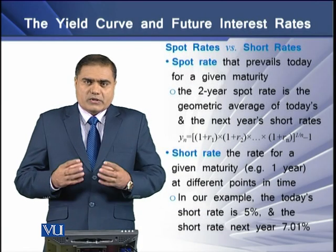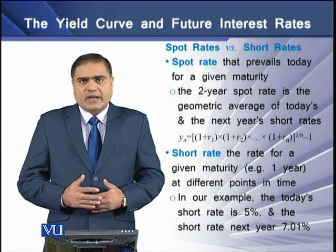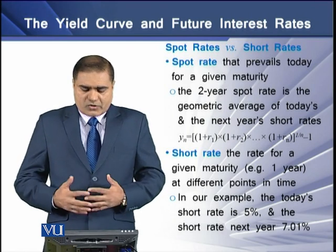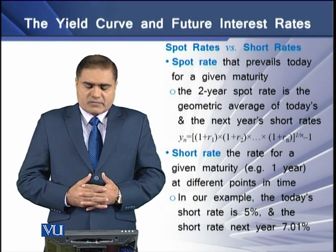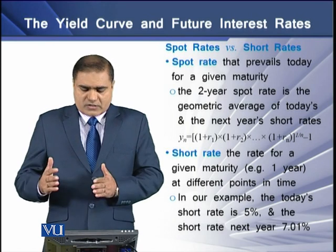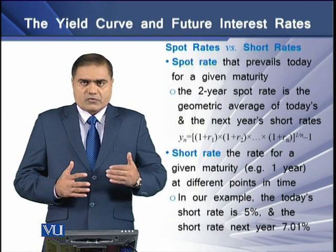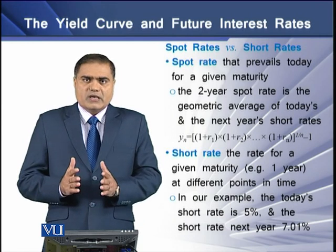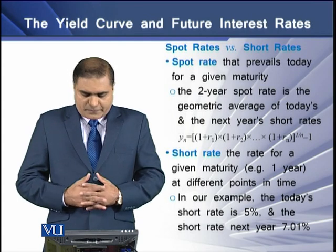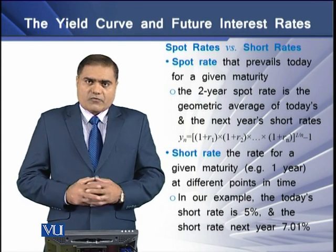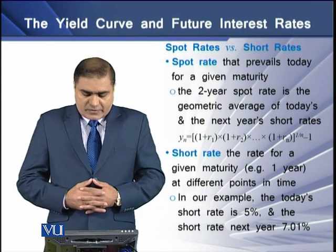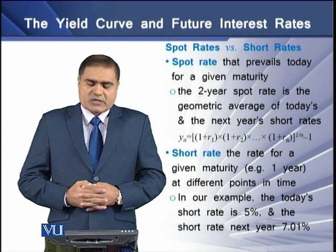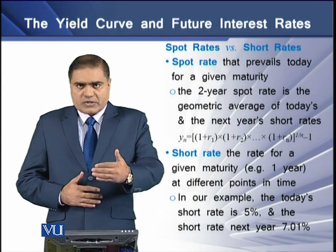We need to distinguish between spot rates and short rates. Spot rates are the rates prevailing today for a given maturity. For example, the two-year spot rate is the geometric average of today's short rate and next year's short rate. The short rate, by contrast, is the rate for a given maturity — for example, a one-year period — at different points in time. In our example, today's short rate is 5% and the short rate at the end of year 2 is 7.01%.